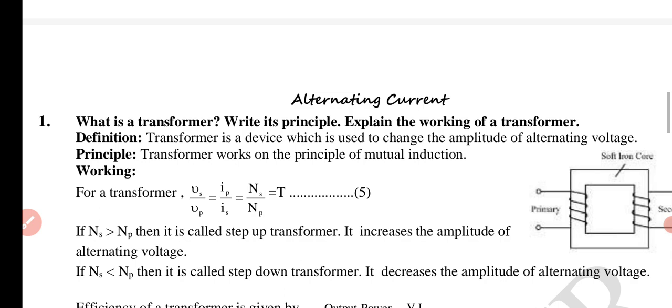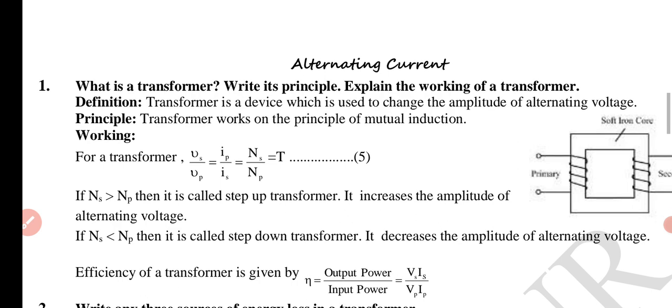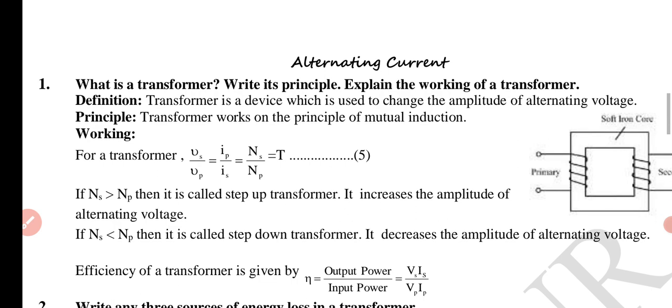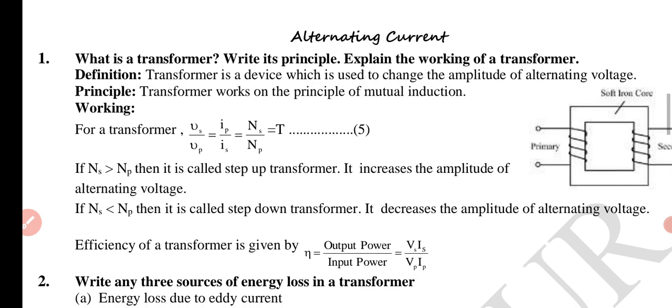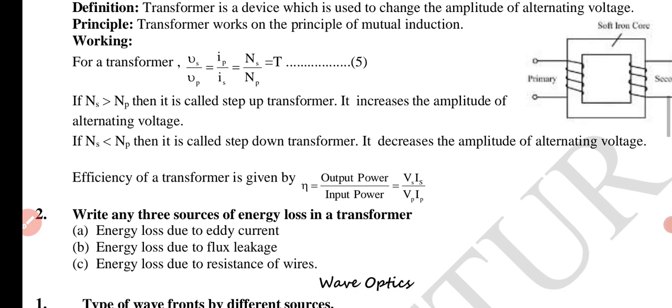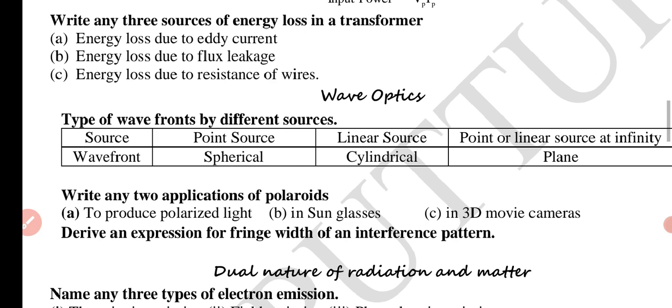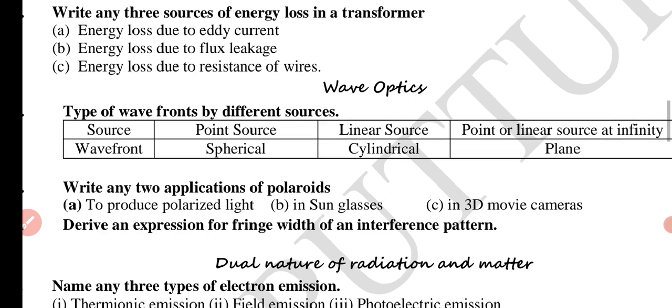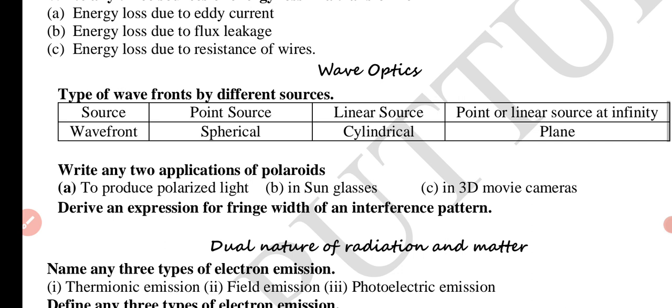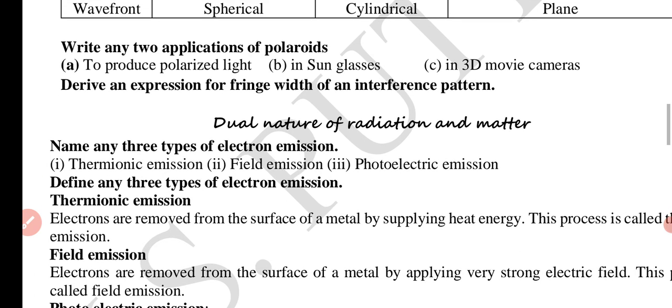Alternating current. What is transformer, write its principle, explain the working of a transformer. Five mark or three mark questions. Write any three source of energy loss in a transformer: energy loss due to eddy current, flux leakage, and resistance of wires. In wave optics chapter, type of wavefronts by different sources: point source produces spherical, linear source cylindrical wavefront, pointer linear source at infinity produces plane. Any two applications of polarized light: to produce polarized light in sunglasses, in 3D movie cameras. Derive an expression for fringe width of an interference pattern.